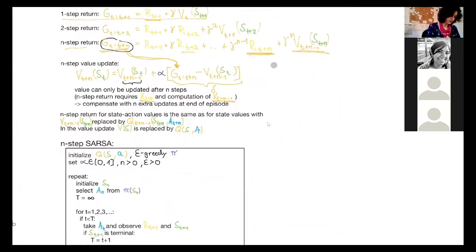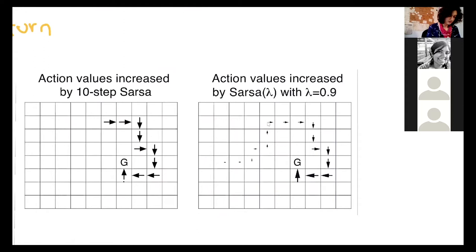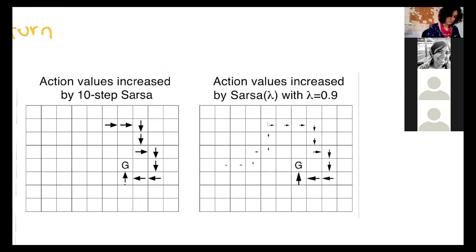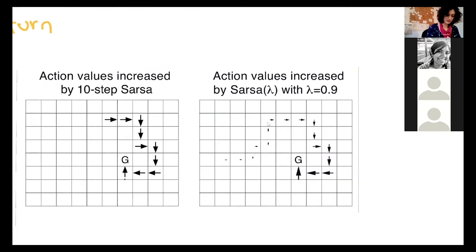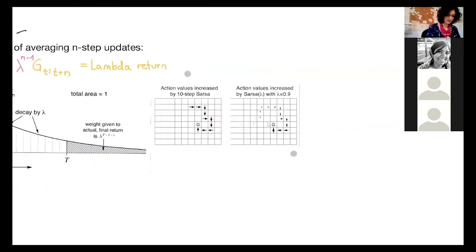So for example, here in this case, these errors are weighted with lambda 0.9. And if you change it, it either remembers or updates more of the states further in the past or less or stronger or weaker. Does that make sense? Yeah, absolutely. Thanks.